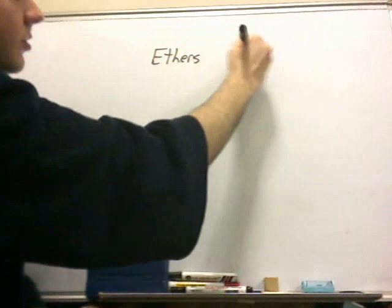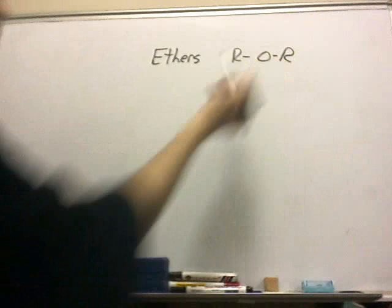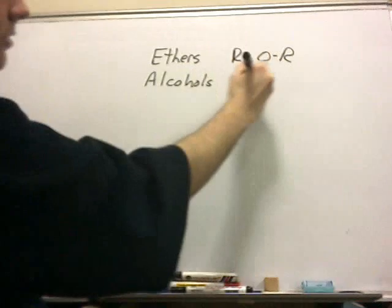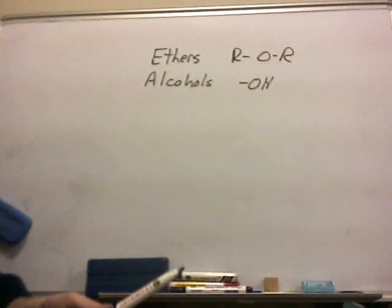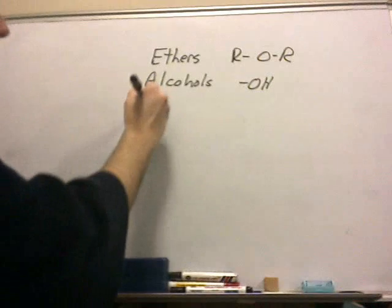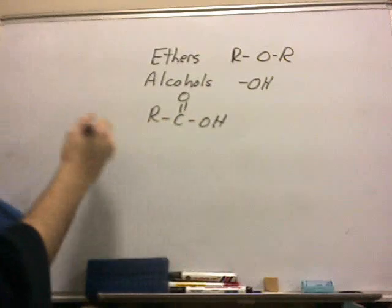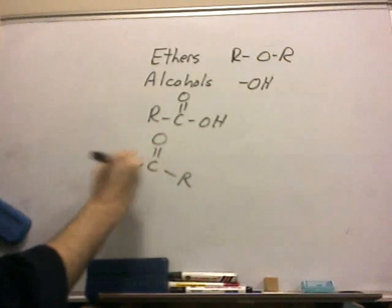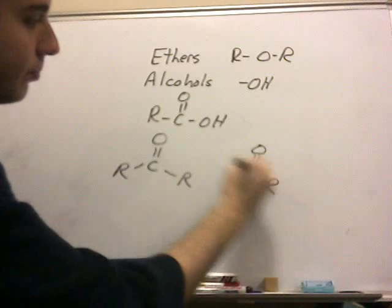Ethers, R denotes a carbon group. It surrounds an oxygen. That's an ether. Alcohols have a hydroxyl group on the side of them. And I'm going to go over the nomenclature for all of these in the next video, because YouTube's 10-minute maximum only allows for a certain amount of time. Carboxylic acids: R, C double bond O, OH. This is a carboxylic acid. Ketones. Again, R is a carbon group. Aldehydes. This is just a brief introduction.